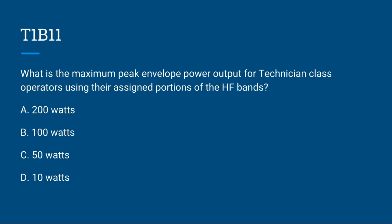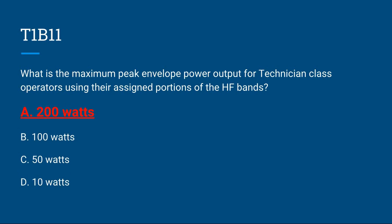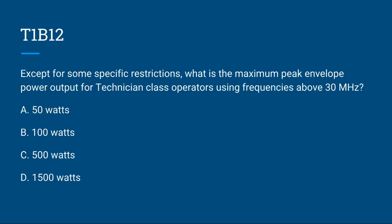T1B11: What is the maximum peak envelope power output for Technician class operators using their assigned portions of the HF bands? A, 200 watts; B, 100 watts; C, 50 watts; or D, 10 watts. The correct answer is A, 200 watts.